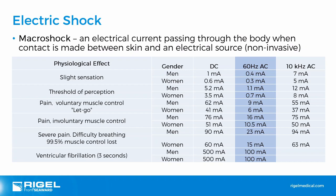As frequency increases, electrical current penetrates tissue less and less. At high frequencies, energy is dissipated as tissue burning rather than propagating through the body to the cardiac muscles. This is why diathermies do not induce electrical shock — they have very high frequency outputs. Nerves and cells in the body are also more responsive to commercial frequencies, not just in how the current propagates but in how they respond to these frequencies, making low-frequency currents more hazardous.